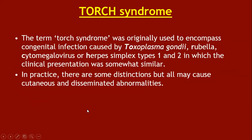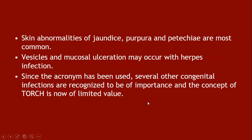TORCH syndrome: the term TORCH was originally used to encompass congenital infections caused by toxoplasma, rubella, cytomegalovirus, and herpesvirus 1 and 2, in which clinical presentation was somewhat similar. All cause cutaneous and disseminated abnormalities in children; skin abnormalities of jaundice, purpura, and petechiae are more common, while vesicles and mucosal ulcerations occur with herpes infection. Since the acronym was introduced, several other congenital infections have been recognized as important, and the concept of TORCH is now of limited value.